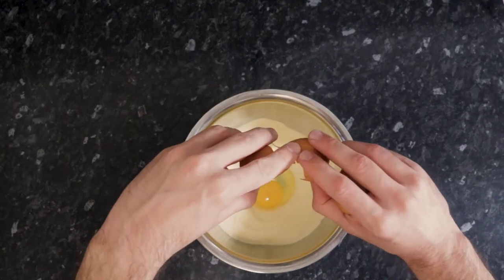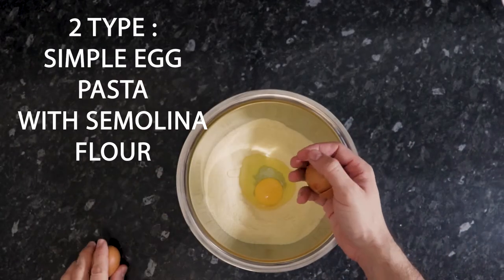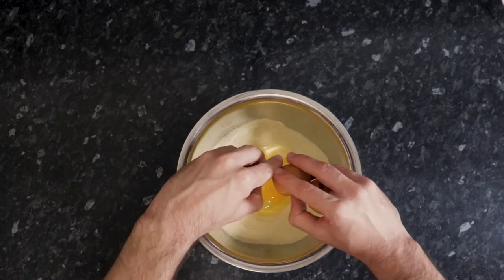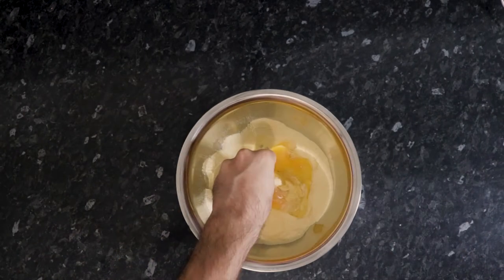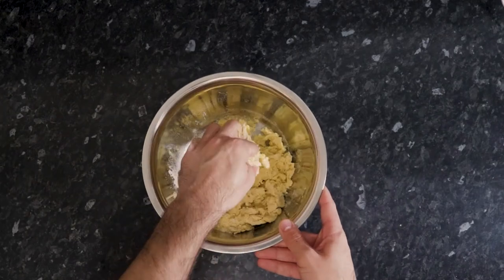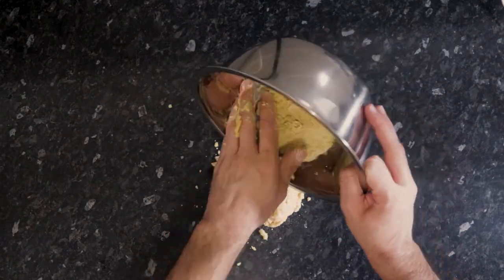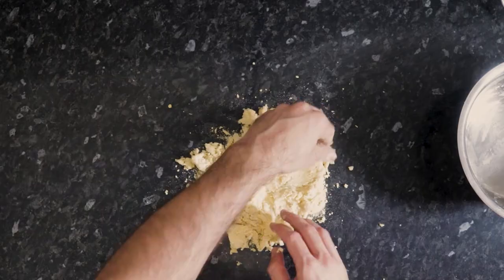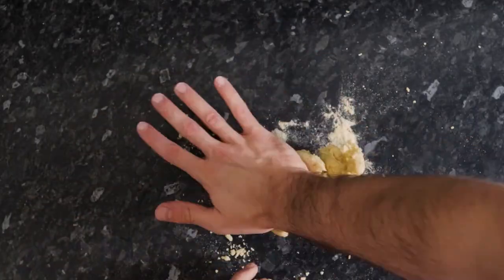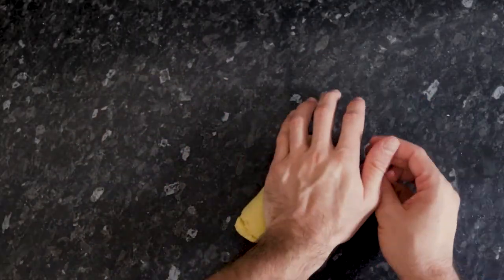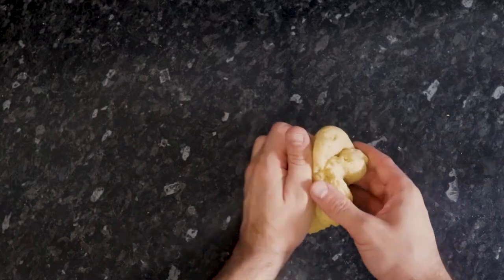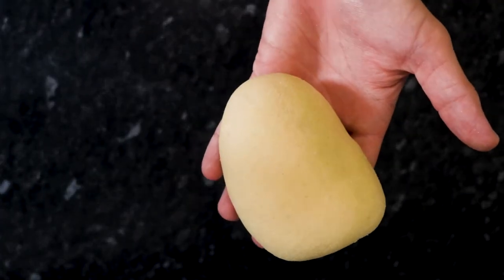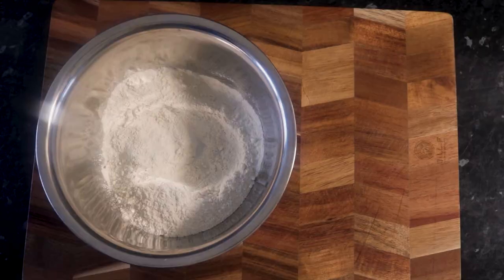Next, we're gonna make pasta again as simple egg pasta, this time switching the 00 flour for semolina flour. Again, 100 grams of flour to one whole egg. We're gonna use the same mixing principle. Just work the dough until ingredients are well incorporated, leave it in the fridge wrapped for about one hour. All pasta doughs can be made in advance and kept in the fridge for a few days.